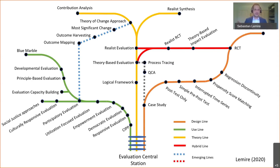As a way of organizing my own thinking about all the different options I have as an evaluator, I recently developed this metro map of evaluation. The map consists of three main lines: a line for study designs, a yellow line in the middle for theory-based evaluation where most of my own practice is situated, and a line for utilization — each of which are central lines to evaluation practice and profession. There are also emerging lines for things starting to gain traction in evaluation practice.